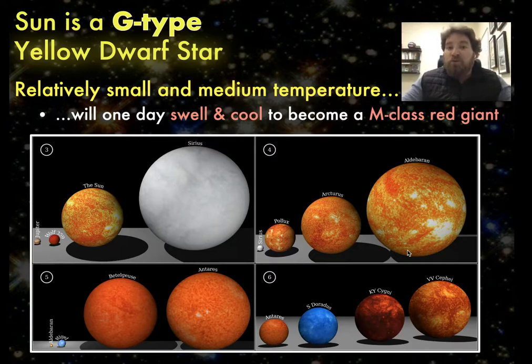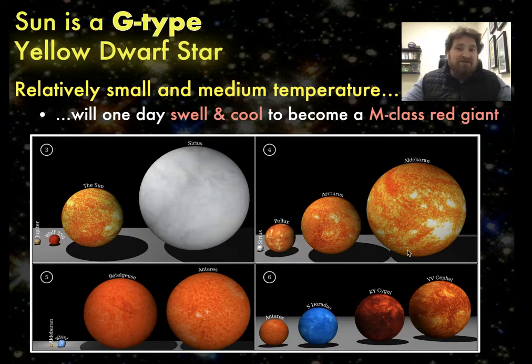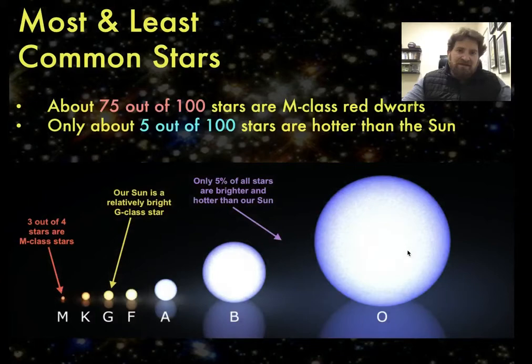As it swells, its surface is actually going to cool and it will evolve into an M class, because it's got a cool surface, red giant, because it's a very large surface area. We'll talk about that a little bit later. So the sun will not always be a G type yellow dwarf star.